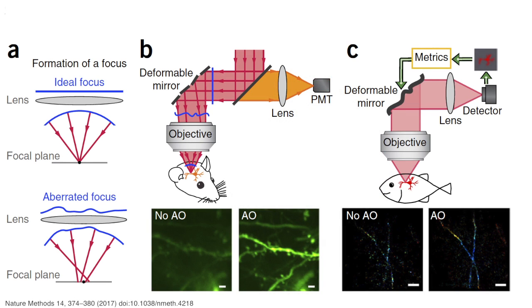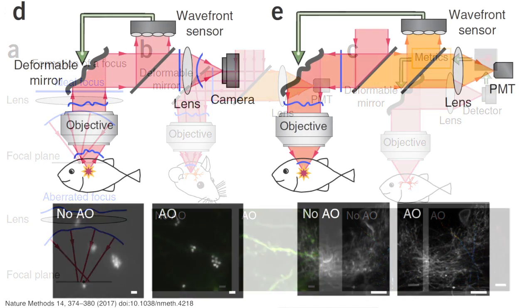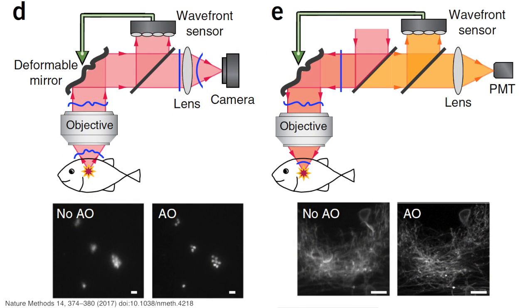We also developed other methods that do not require the generation of a guide star or direct measurement of the wavefront. For example, one of the projects we look at is the visual cortex. The cortex is the layer of the brain at the very surface, where basically all our conscious thought processes happen. We look at the visual cortex, which is where visual processing happens.